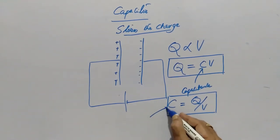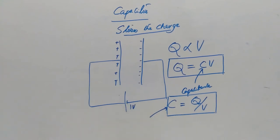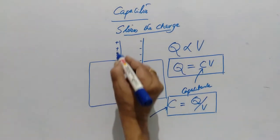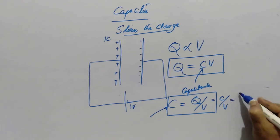Then what this capacitance tells us? Suppose if we have connected one volt here and if it is able to store one coulomb charge, then this coulomb per volt is only known as capacitance and it is specially called as one Farad.